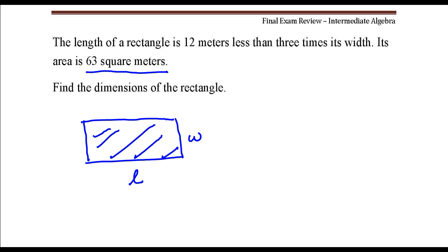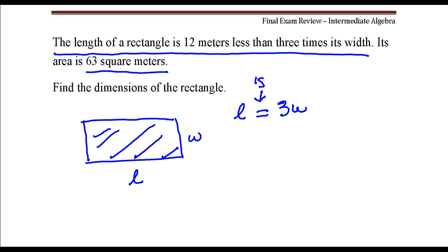If you look at the very first sentence, it says the length of a rectangle is 12 meters less than 3 times its width. Okay, so this length L is, that word is, that equal sign, 12 meters less than 3 times its width, so 3W minus 12.